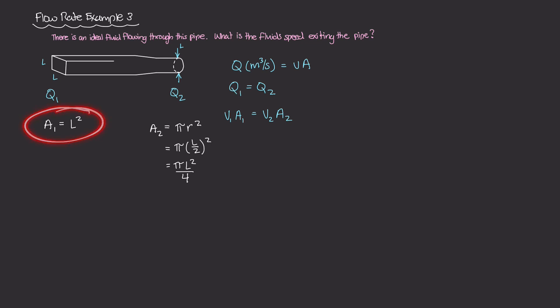So now that we have area 1 and area 2, which is this pi L squared over 4, we can plug those values into this continuity equation and solve for V2 in terms of V1. So I'm going to go ahead and do that. So V1 I'll leave as V1. And then A1 is that L squared. And this is equal to V2 times A2. And A2 we found to be pi times L squared over 4.